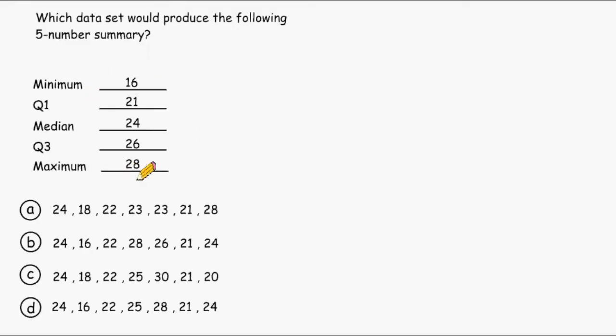Now with this five-number summary we can see that the minimum value is 16 and the maximum is 28. If we look at data set A we can see that its minimum value is 18 and not 16, therefore we can eliminate choice A.